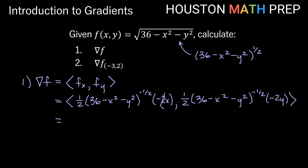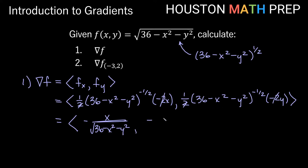We have a 2 in the numerator and a 2 from the one-half that reduce nicely in both components. So we get -x times (36 - x² - y²) to the negative one-half — the negative exponent means denominator and the one-half means square root. This gives us the square root of (36 - x² - y²) in the bottom for both components. So del f = (-x / √(36 - x² - y²), -y / √(36 - x² - y²)).